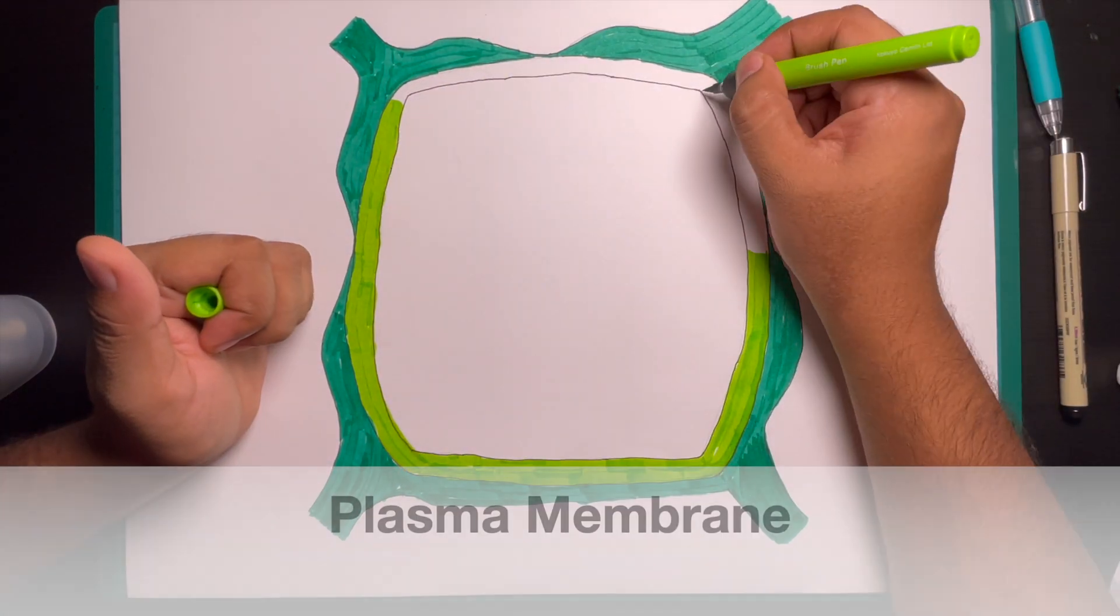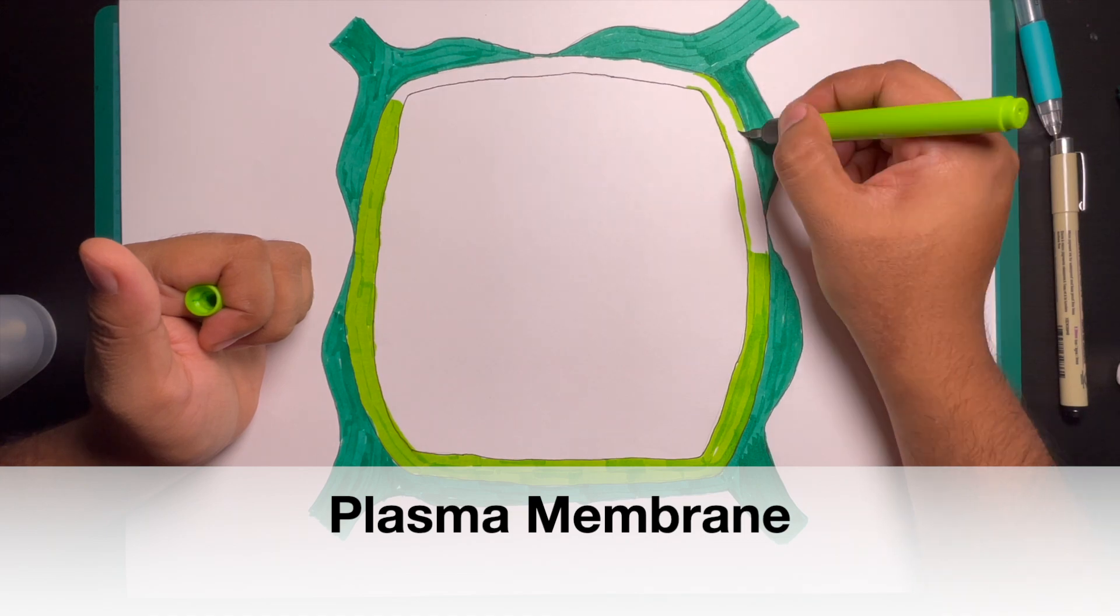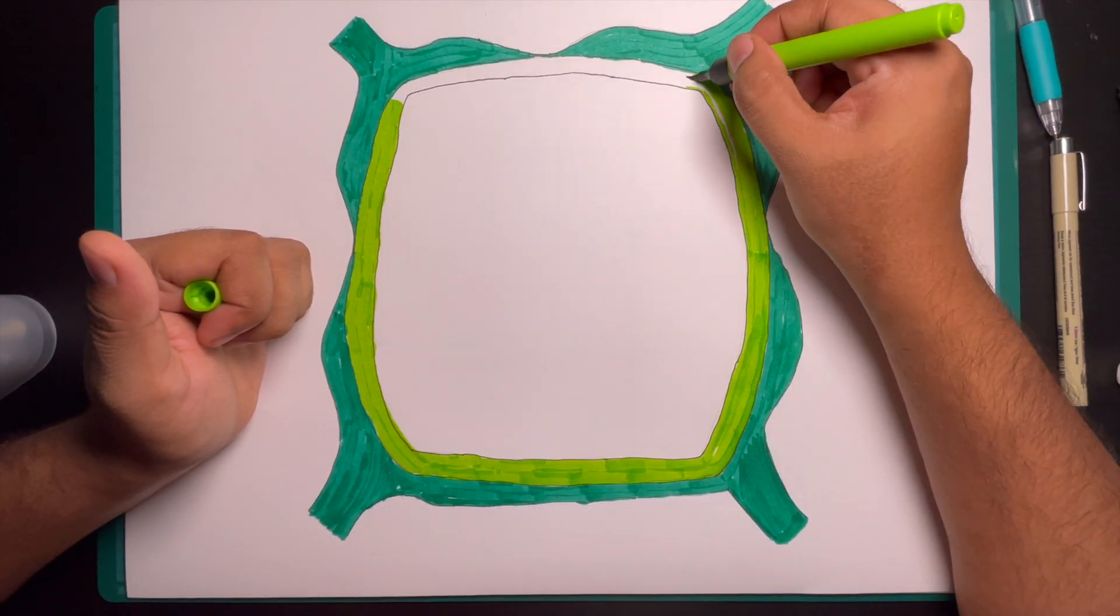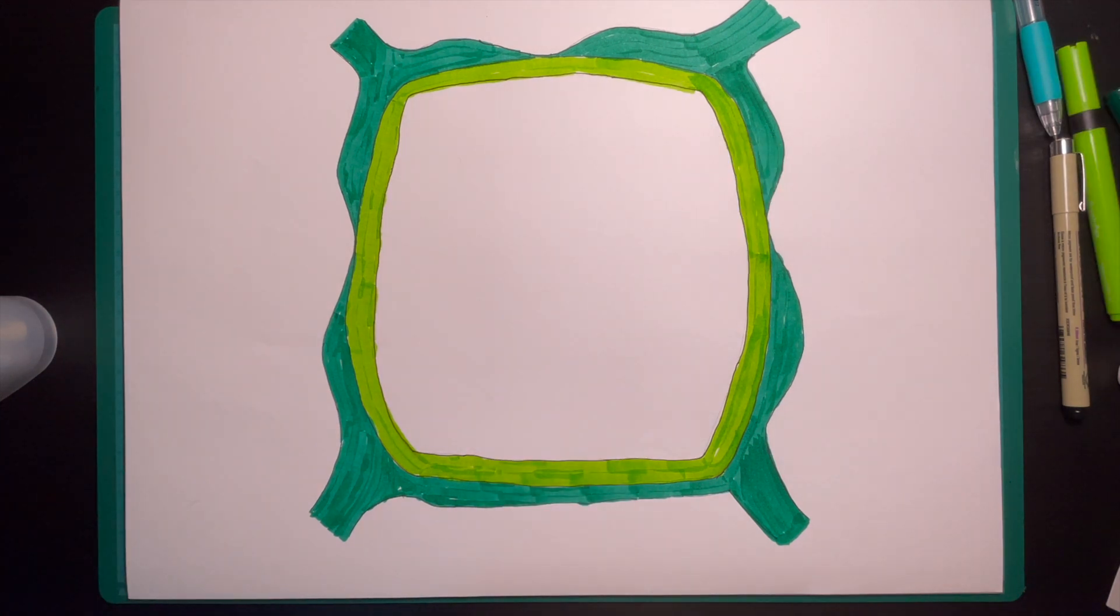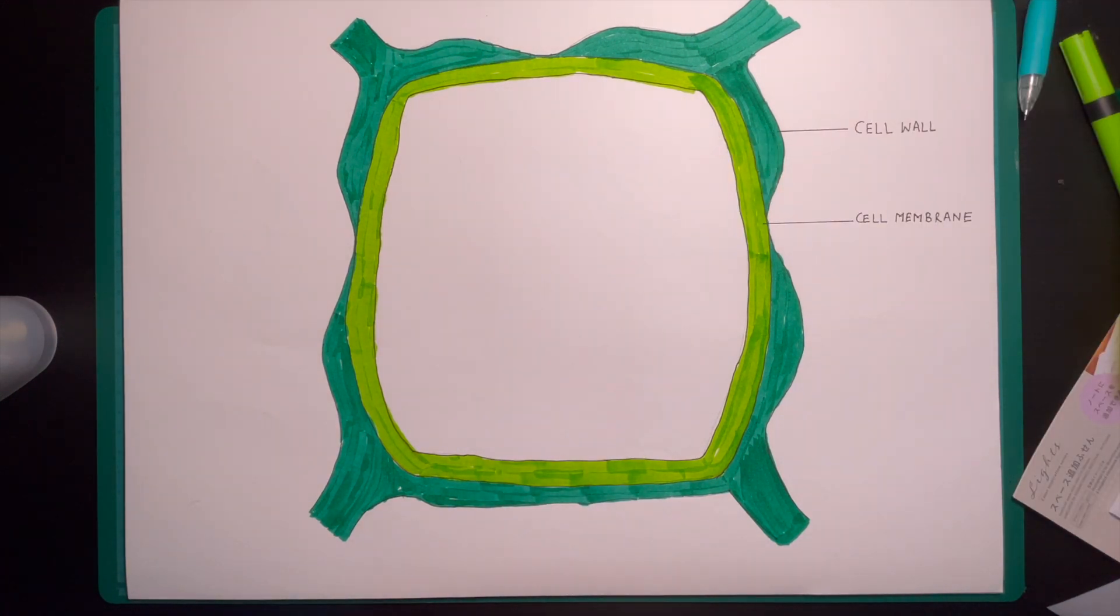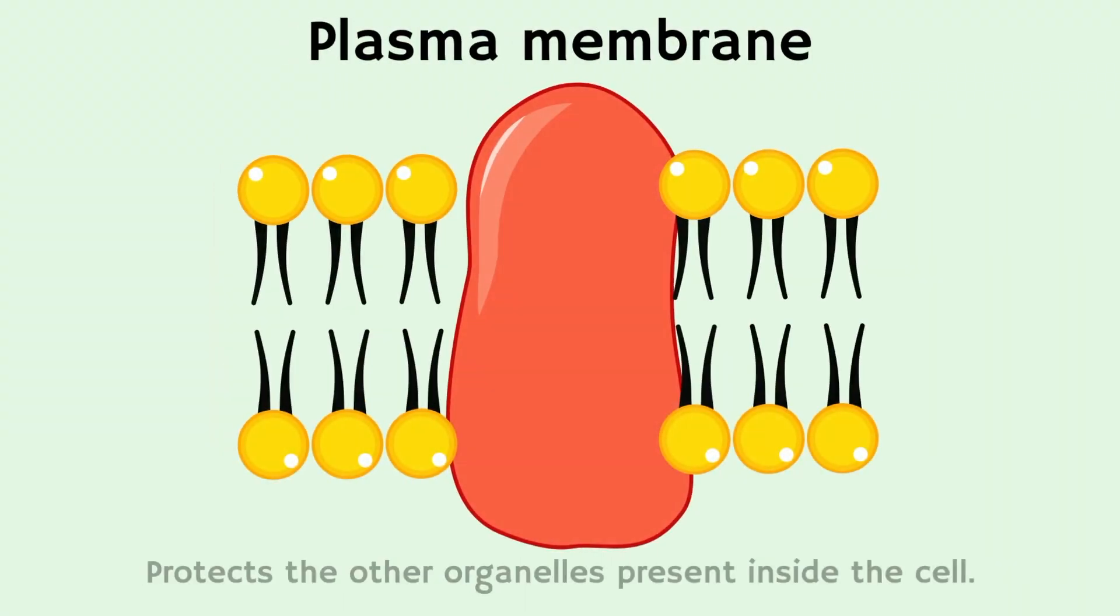Now let us see the next covering that is the plasma membrane. The plasma membrane is a living semi-permeable and elastic single membrane. It is made up of proteins and lipids that surround the protoplasm. Now let us see the functions of plasma membrane.